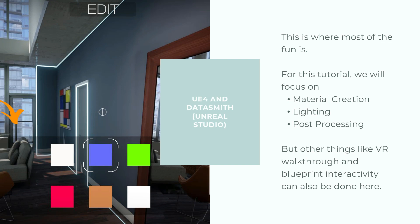Unreal Engine is essential especially when talking about real-time interactivity — for example, if you want to show clients that they can change colors or change furniture inside a walkthrough. If you want to put on a VR headset and walk around models in real time, you need a game engine like Unreal Engine. I'm not talking about a 360 video or 360 picture — 3D Studio Max can achieve that — but for an actual VR walkthrough with blueprint interactivity you need a game engine like Unreal Engine. Unity is another very popular engine, but for this tutorial we'll just go through Unreal Engine.